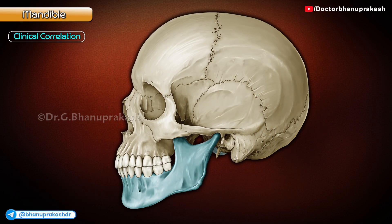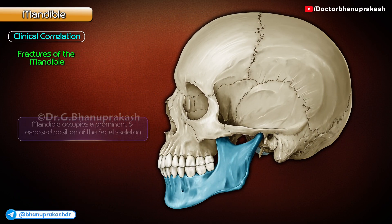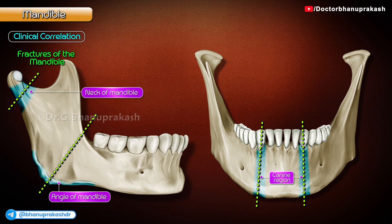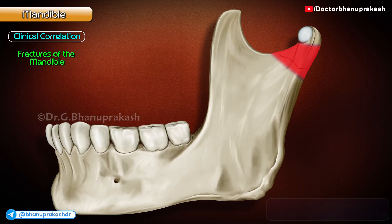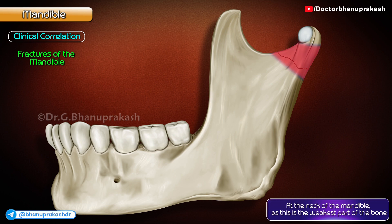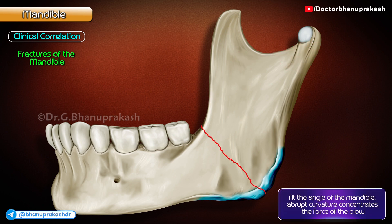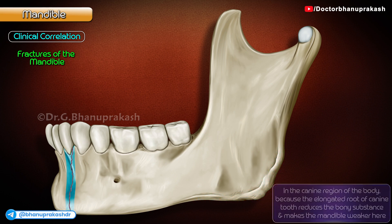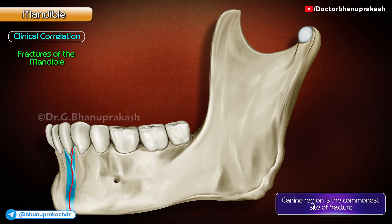Clinical correlation. Fractures of the mandible: the mandible occupies a prominent and exposed position of the facial skeleton, and hence is commonly fractured following violent injuries. The mandible tends to fracture at one of three sites: at the neck of the mandible, as this is the weakest part of the bone; at the angle of the mandible, because here abrupt curvature concentrates the force of the blow; and in the canine region of the body, because the elongated root of the canine tooth reduces the bony substance and makes the mandible weaker here. The canine region is the commonest site of fracture.